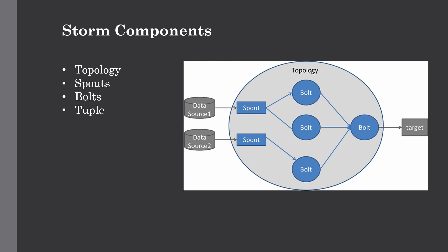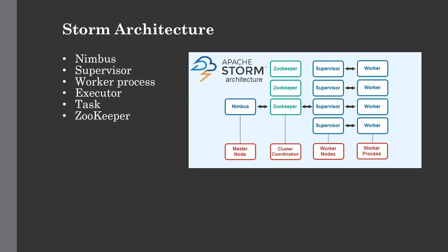Spouts and bolts are connected together and they form the topology. The combination of spouts and bolts forms the topology, and the real-time application logic is specified inside this Storm topology. You can think of a topology as a directed graph where all the computation happens. The main highlight of Storm is fault tolerance — it doesn't have any single point of failure because of its distributed processing. We can install Apache Storm on as many systems as needed to increase the capacity of the application.